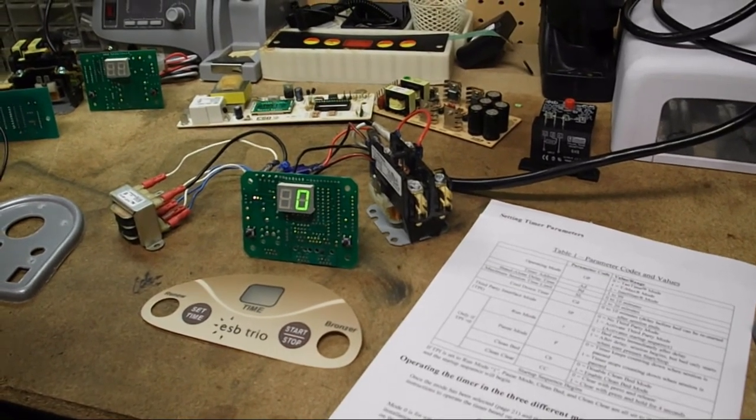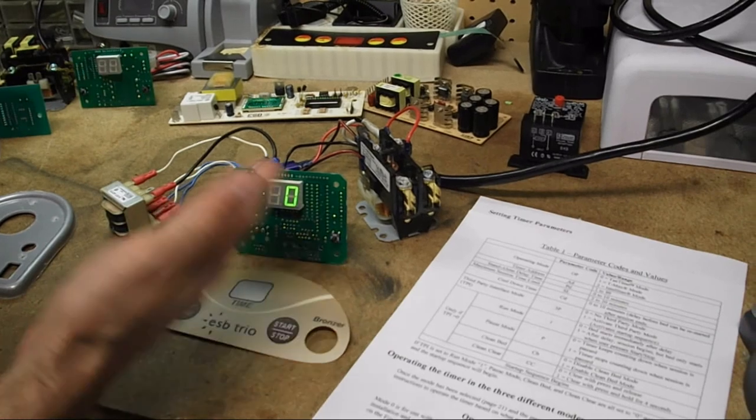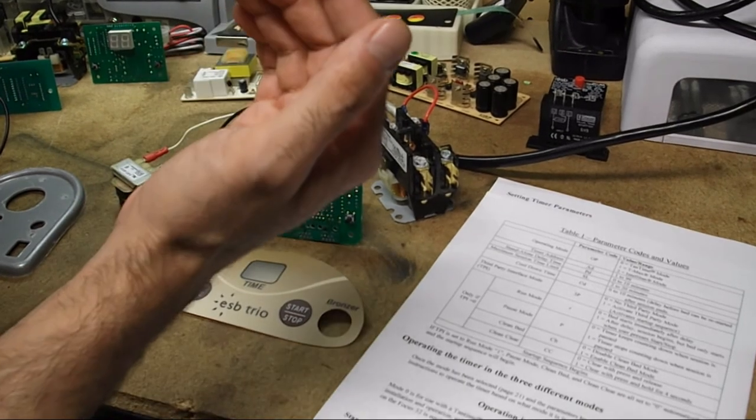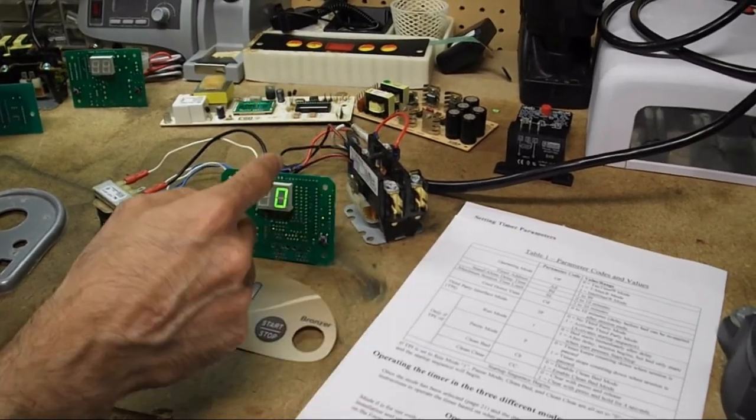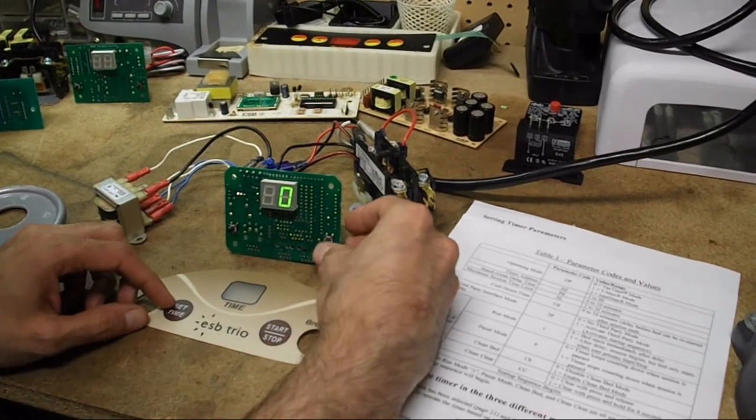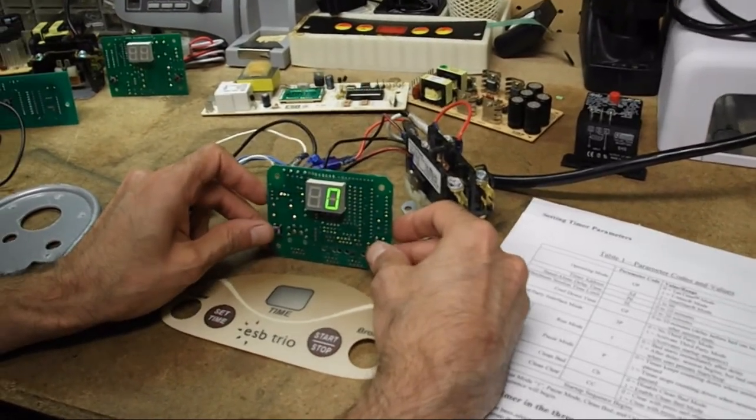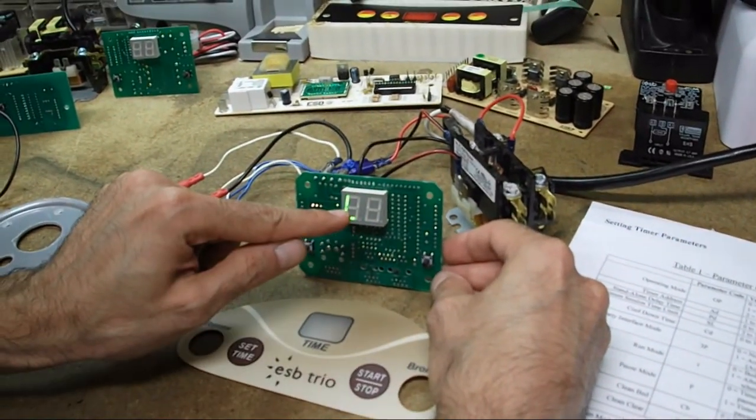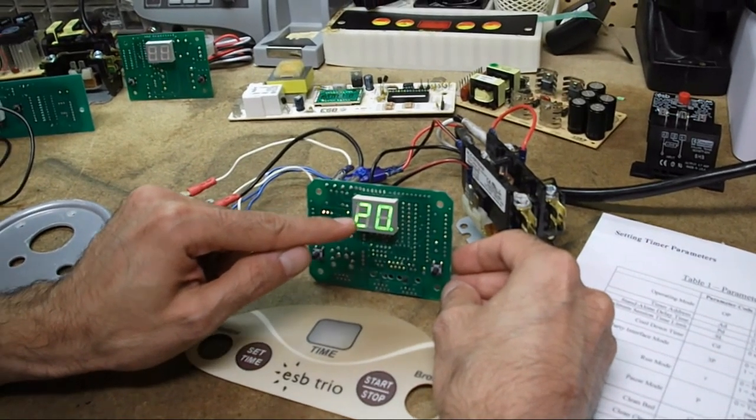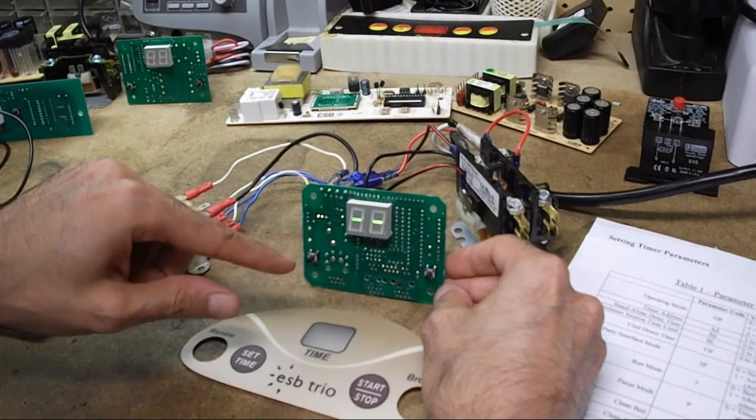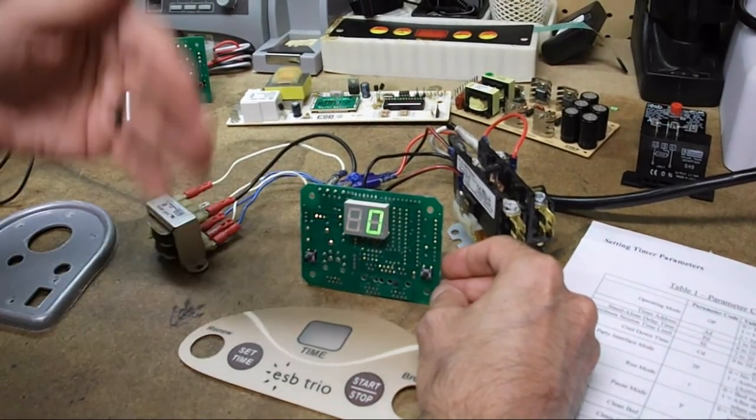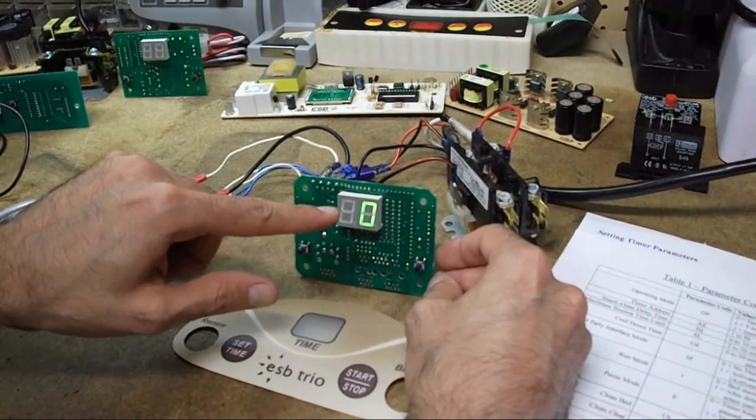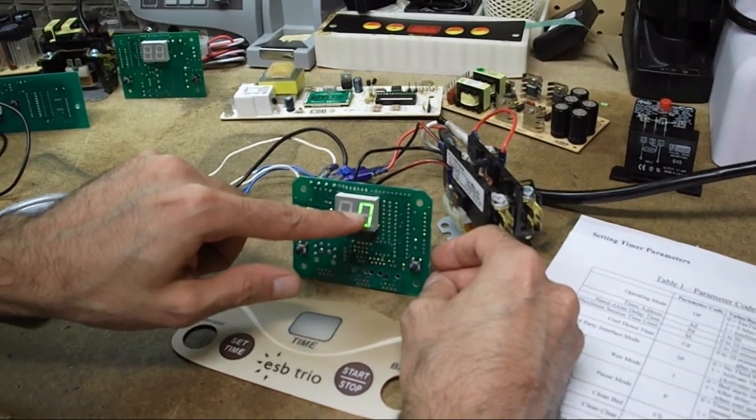So when we go to actually set the timer parameters, we need to trigger that start up sequence. You can trigger the start up sequence again by unplugging and plugging the bed back in or you can simply press and hold the start stop button and then also the set time button simultaneously and you see the two double dashes there. Then it runs through the start up sequence. Yours might look different than this. You might have different numbers and characters. But what we're doing is just basically triggering the start up sequence.